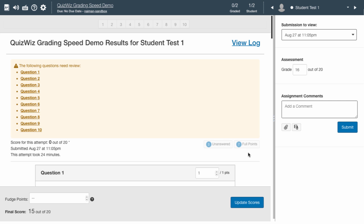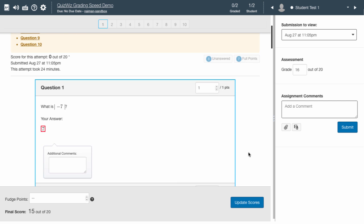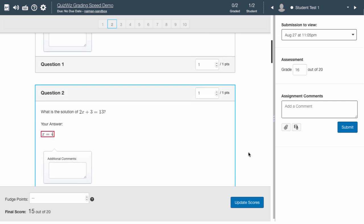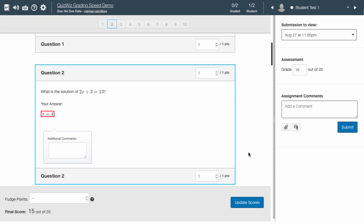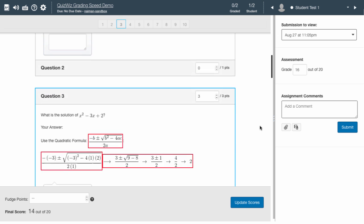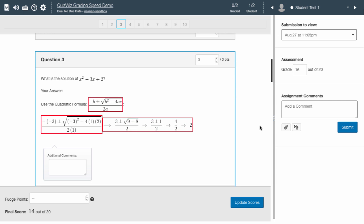Now, you simply have to deduct points from those answers that do not deserve full credit. The first answer is correct, so no clicks of the arrows are needed. The second answer is incorrect, but now it takes only one click to assign a zero. The next answer deserves the full three points, which have already been assigned.